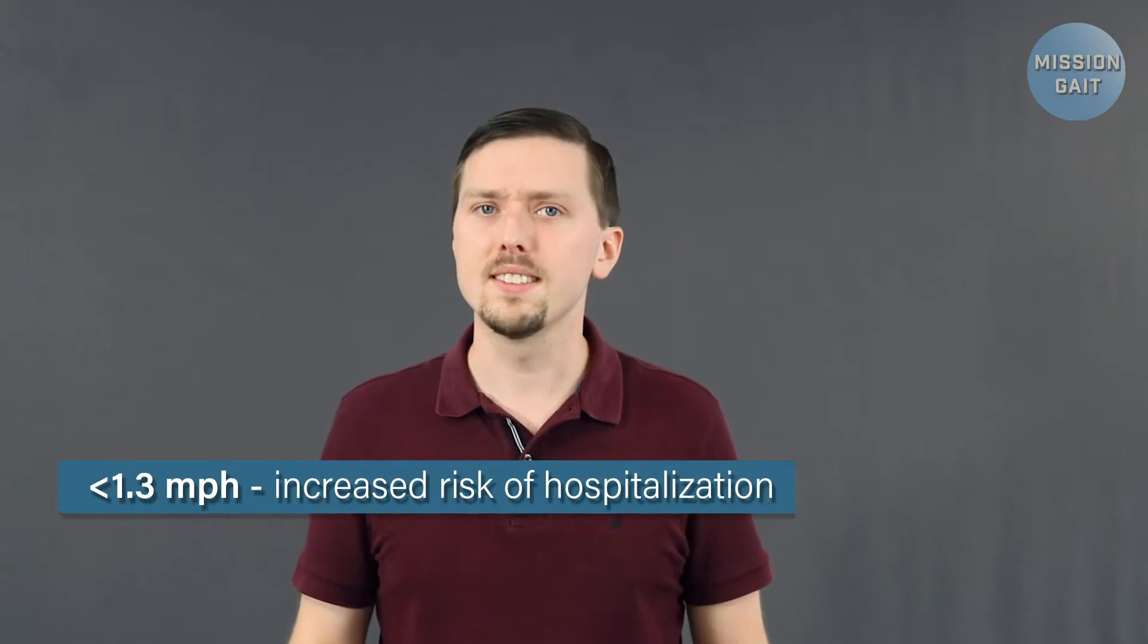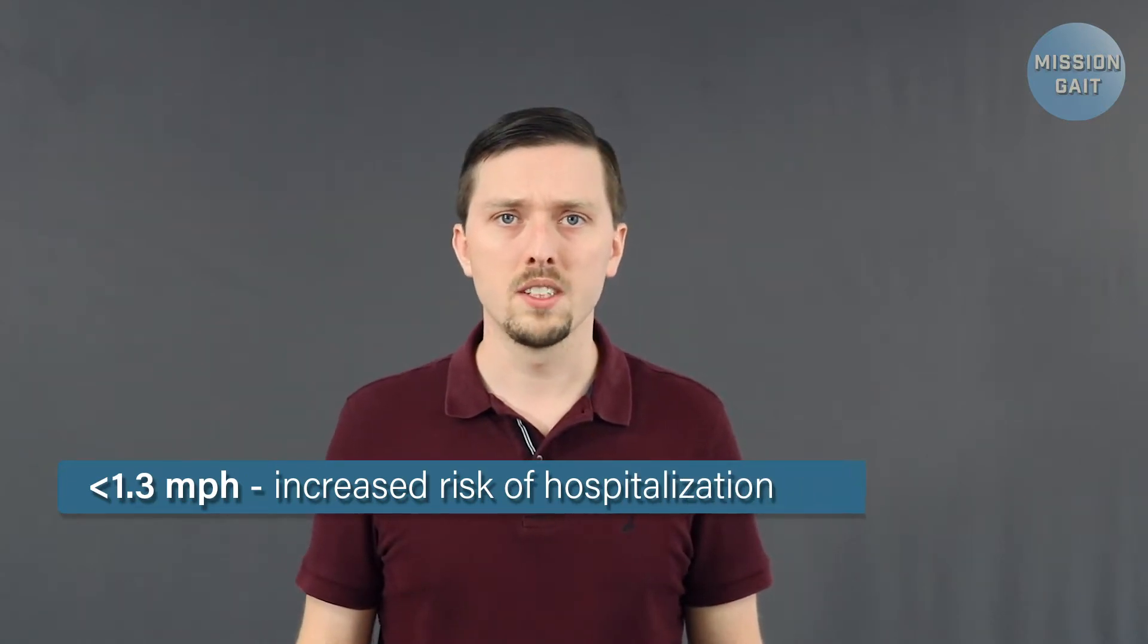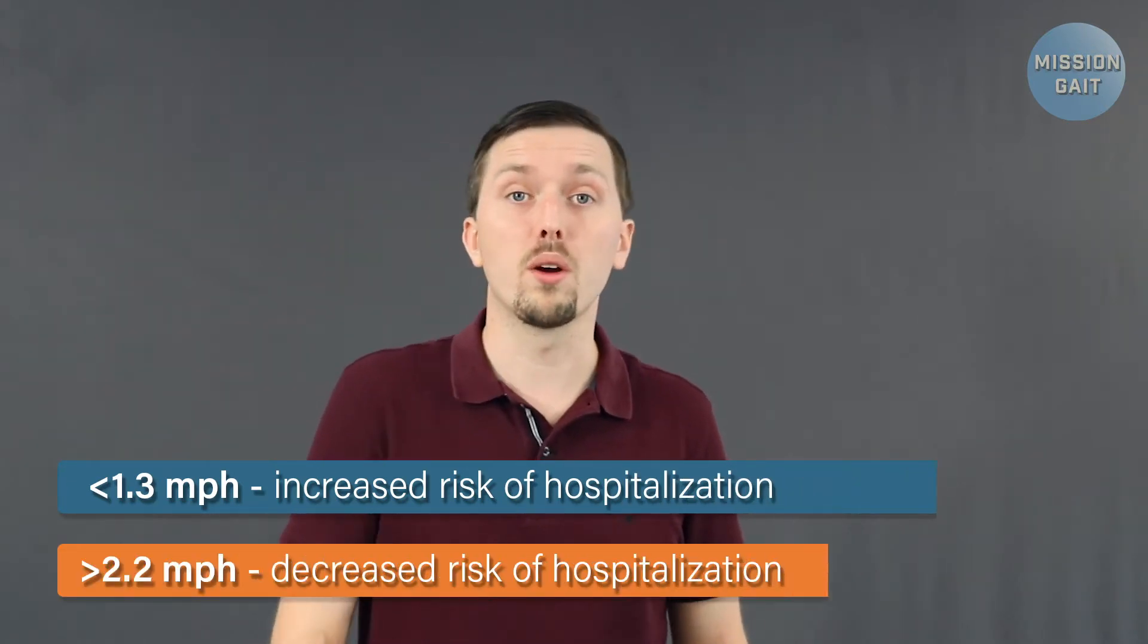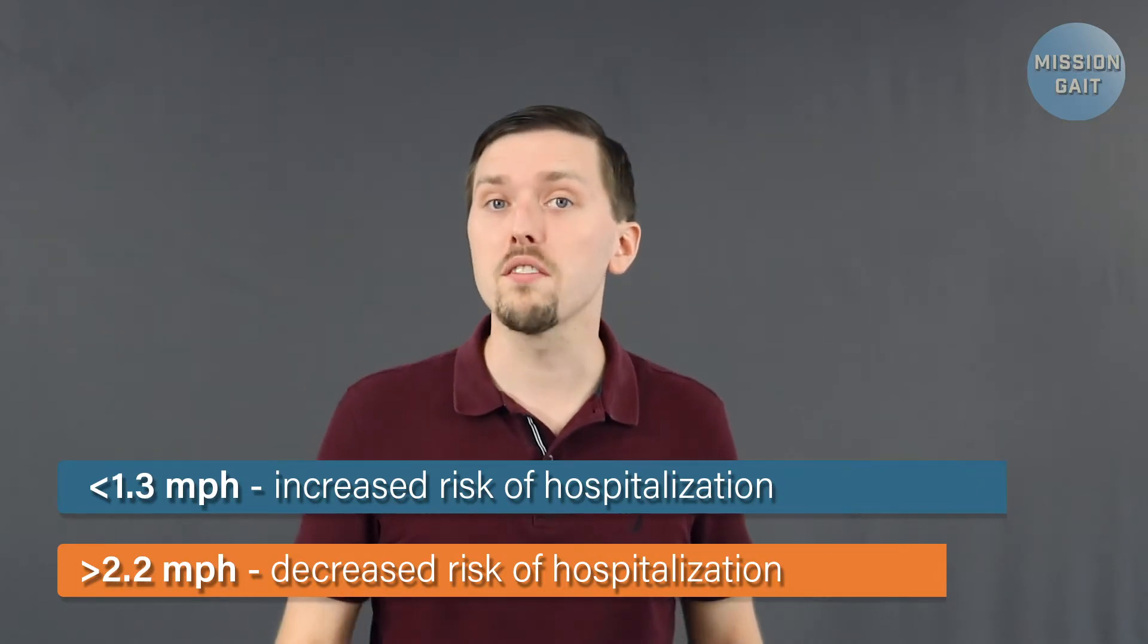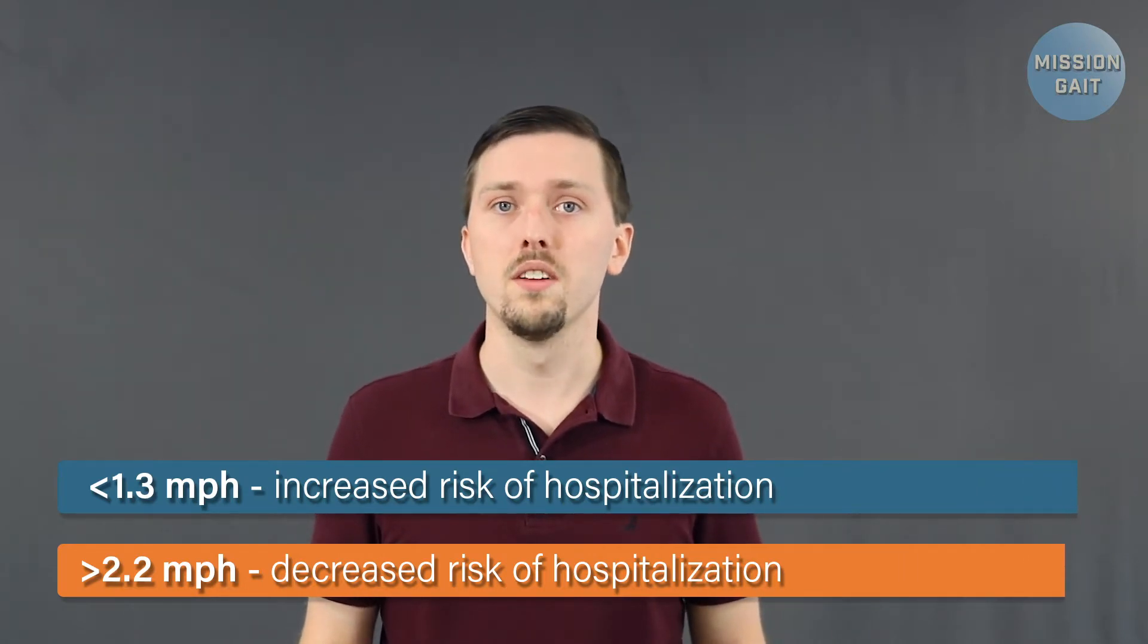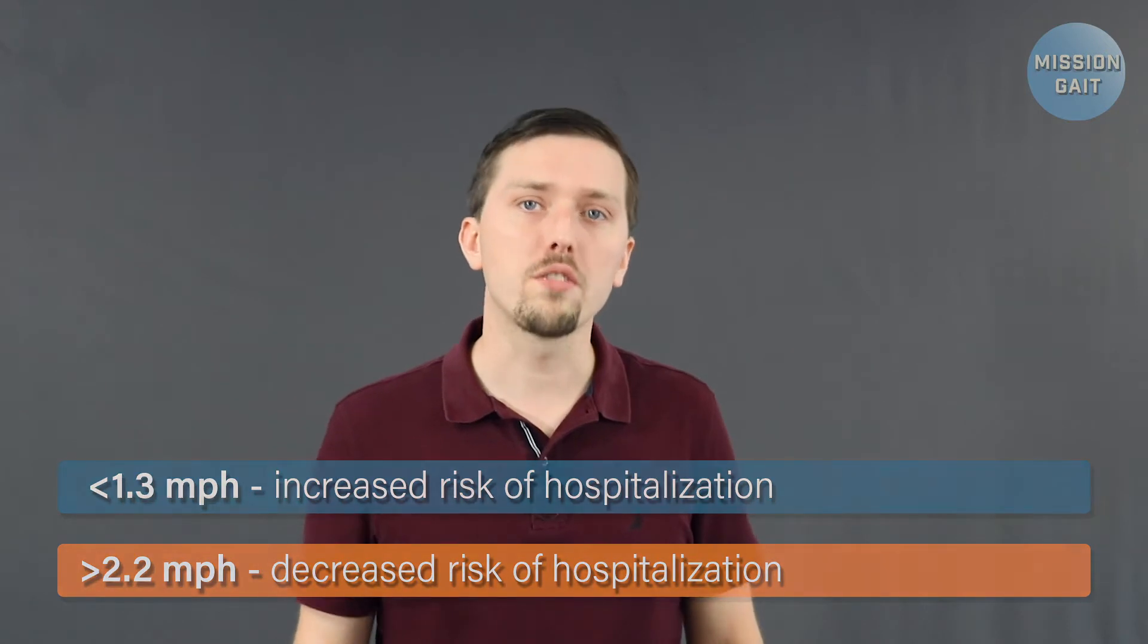In a 2009 study called Walking Speed, the Sixth Vital Sign, researchers pulled together a collection of data showing the implications of a reduced walking speed. For those walking slower than 1.3 miles per hour, there is an increased risk for incidents requiring hospitalization. Compare that to walking faster than 2.2 miles per hour, which actually reduced the risk for hospitalization. And speeds greater than 2.2 miles per hour were also correlated to greater independence in daily function and walking. That makes this speed an excellent goal to achieve.